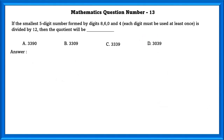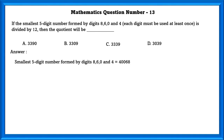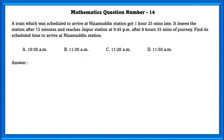Mathematics question number 13. If the smallest 5-digit number formed by given digits, where each digit must be used at least once, is divided by 12, then the quotient will be. The smallest 5-digit number formed by the digits is 40,068. Divided by 12, which equals 3,339.